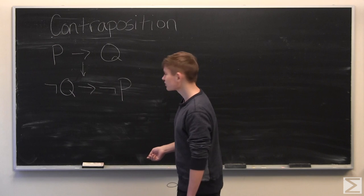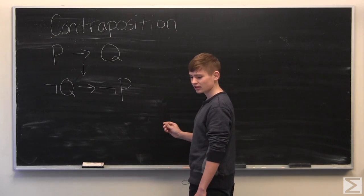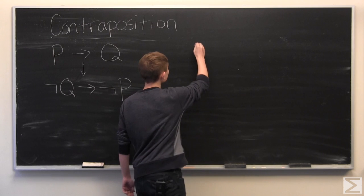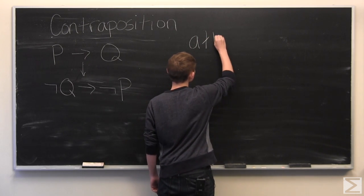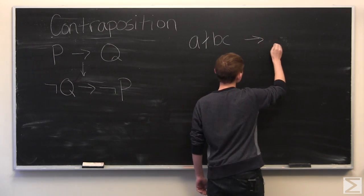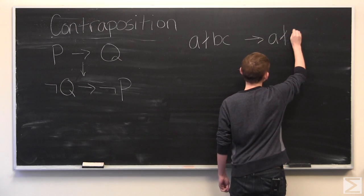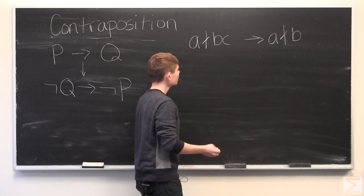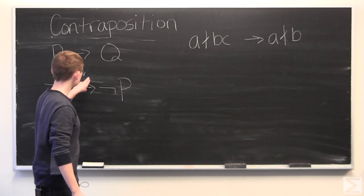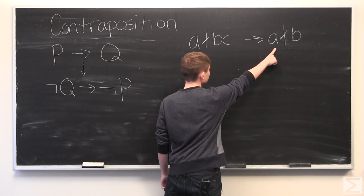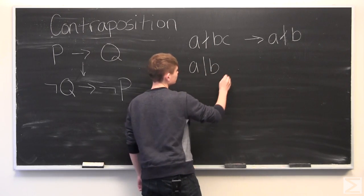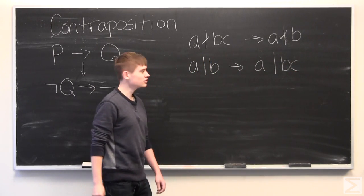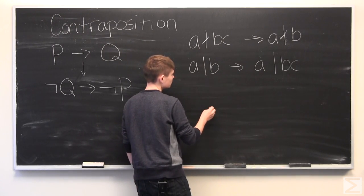So, let's do a few examples. The first is a simple example that we did in a previous video. If we have that A does not divide BC, this means that A cannot divide B, where A, B, and C are just some integers. And, by using contraposition, we are going to rearrange it to say that not Q, or otherwise A does divide B implies that A does divide B times C, which we have shown before, so I will just do it quickly.